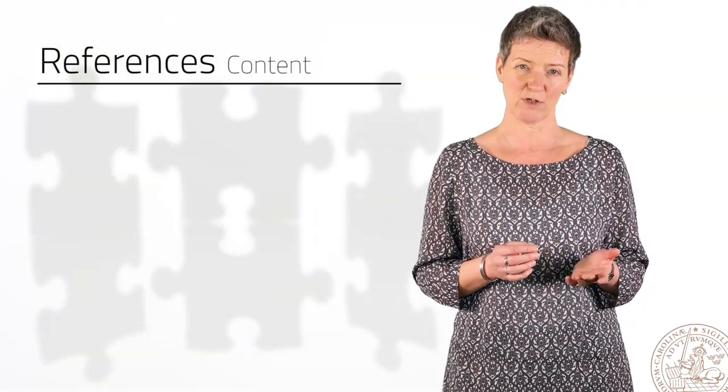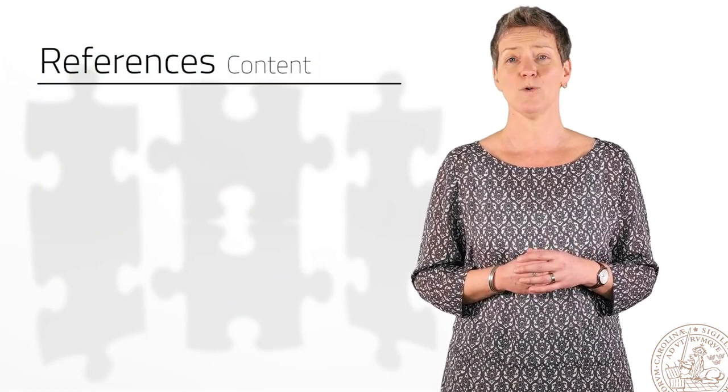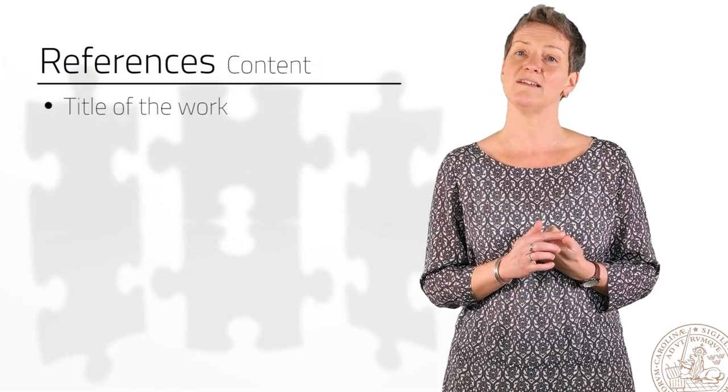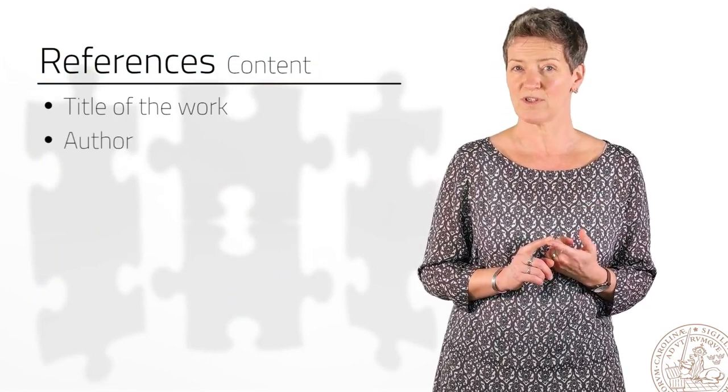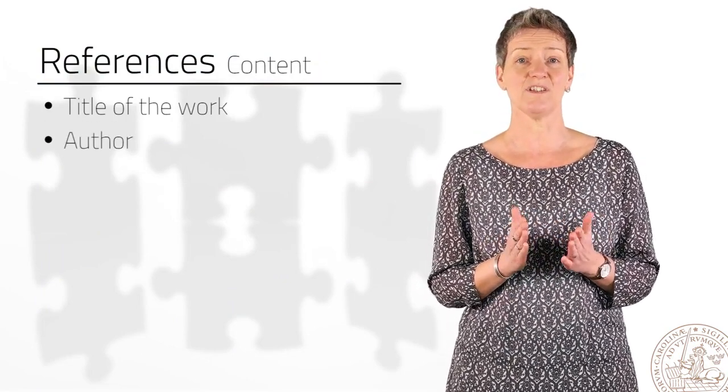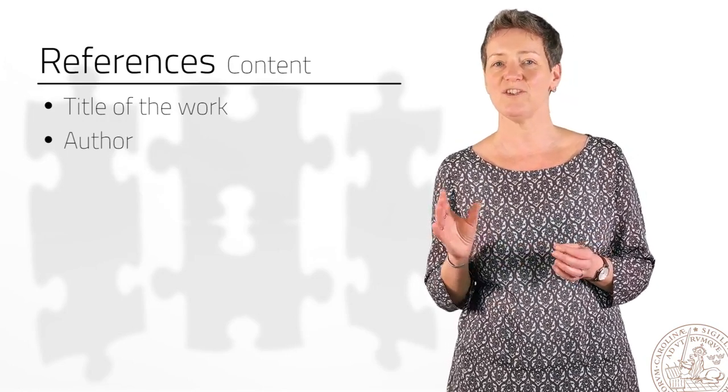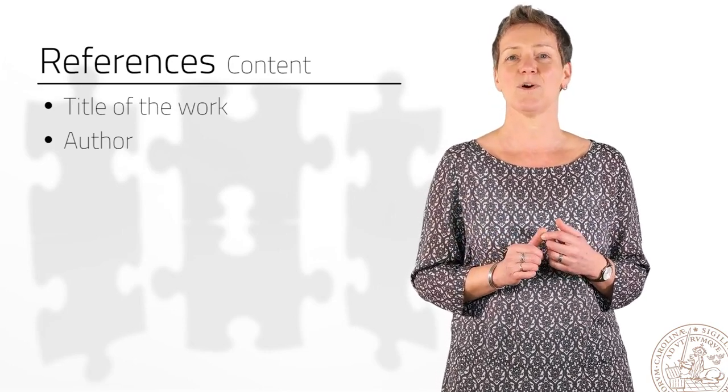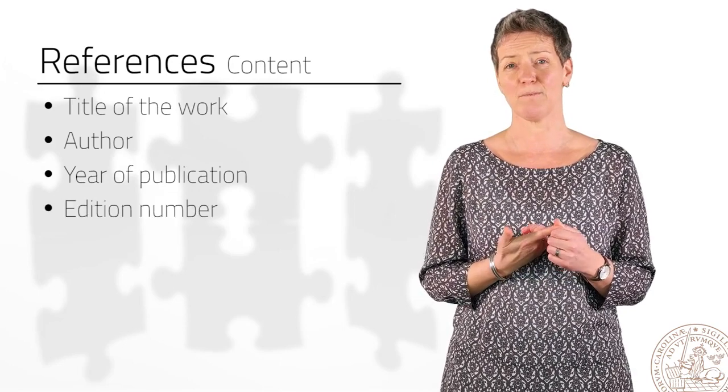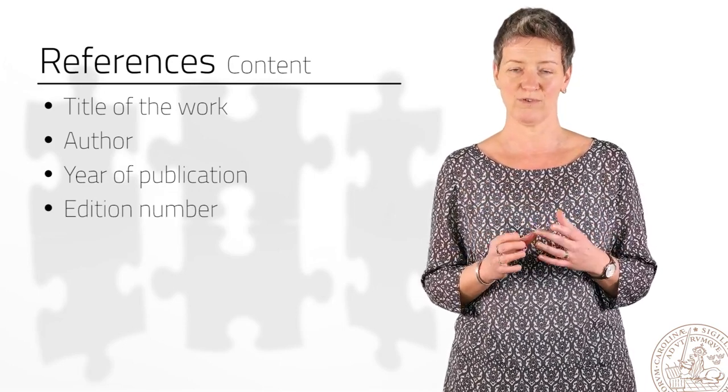For your reference to be correct and understandable, several parts need to be included. Obviously, the title of the work you're referencing needs to be there, as well as the author. And if we look at books, for example, we notice these can come in different editions. Sometimes revisions, adaptations or changes have taken place between these different editions. This is why you need to include the year of publication and edition number of your reference, so your reader knows exactly which source you've used.